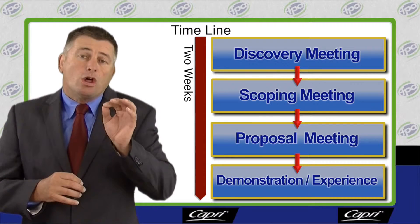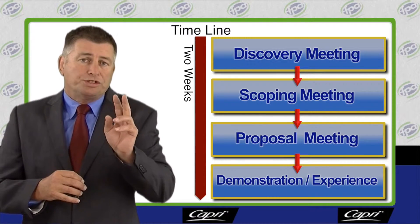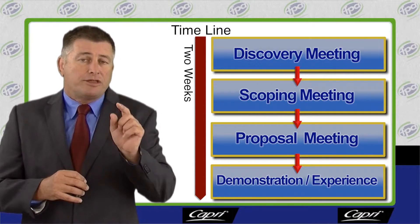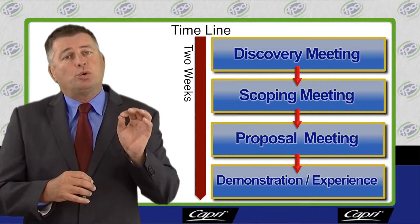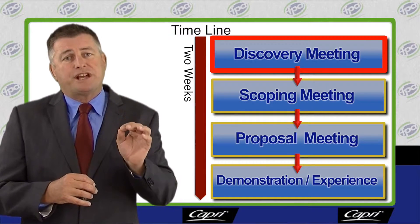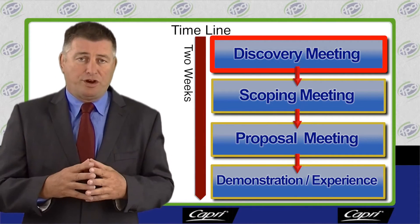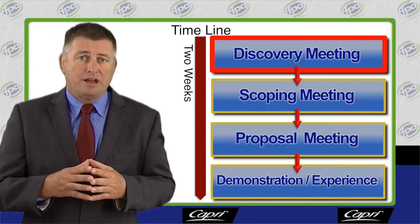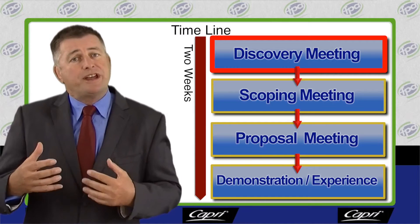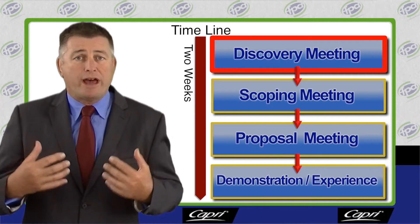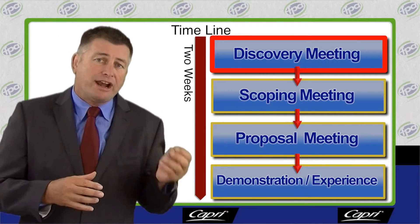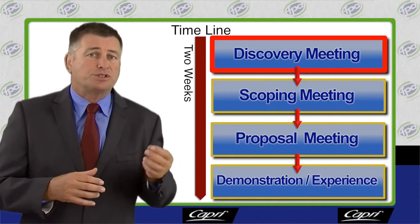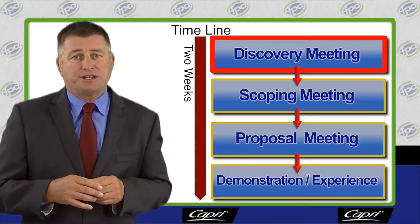Now, two rules only. The first meeting must always be the discovery or qualifying meeting — we're there to find out about them rather than tell them about us. That allows us to put a solid proposal together.